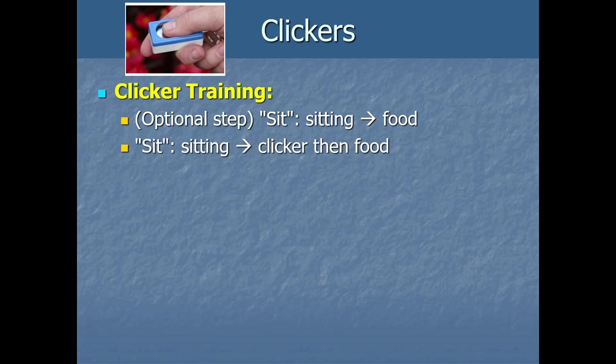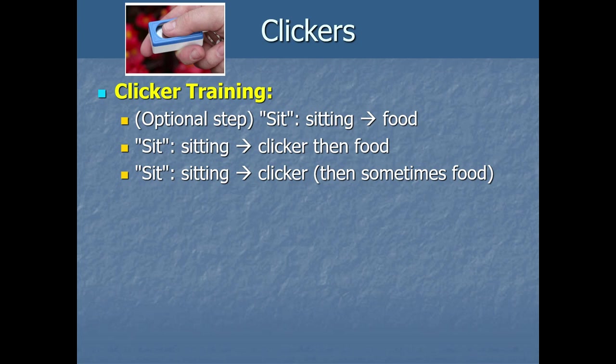In practice, you might first give a verbal command — a discriminative stimulus — to set the occasion for sitting behavior. You verbalize 'sit,' and the contingency is: if the dog sits, you give it food. Then, as soon as the dog sits, you click and then give the food. Next, you start making the food intermittent — sometimes they get food while keeping the clicker consistent. Intermittent reinforcement is resistant to extinction due to the partial reinforcement effect.